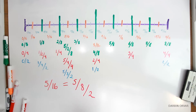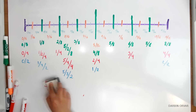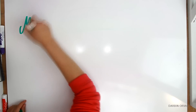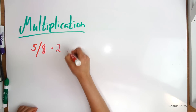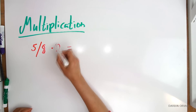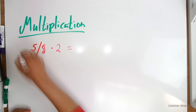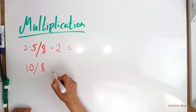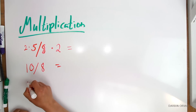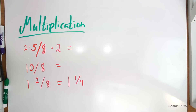Isn't that neat? It's easy to see based on how you divide and multiply fractions. A little primer: we have 5 eighths multiplied by 2. That means we multiply the 2 with the 5, the numerator, and we leave the denominator — the 8 — alone. So we have 10 eighths, which is equal to 1 and 2 eighths, or 1 and 1 quarter.